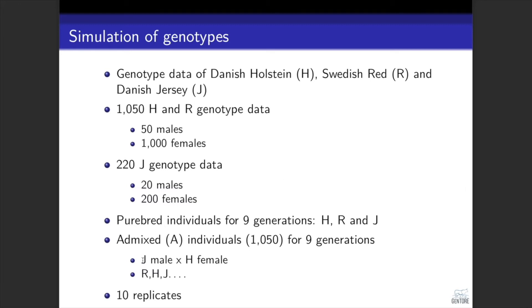For admixture individuals, we first mated Jersey males and Holstein females, and then continued with Red, Holstein and Jersey males until we reached nine generations. So we had nine generations of purebred populations and nine generations of admixed population. In total, we had 10 replicates starting from the same base population, but the males and females assigned and the matings differed across these replicates.